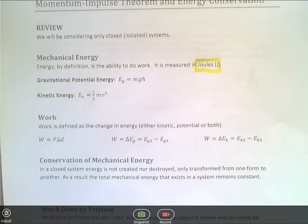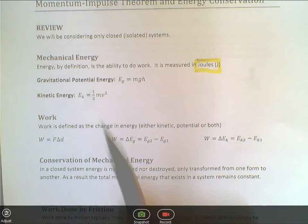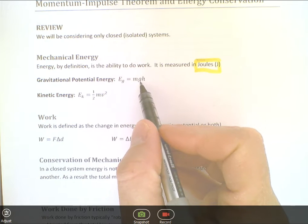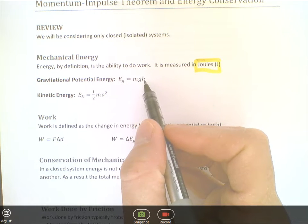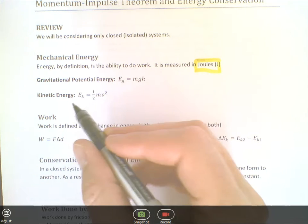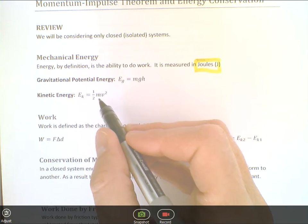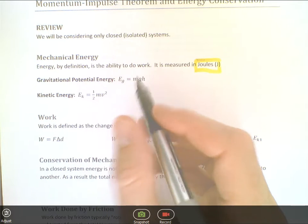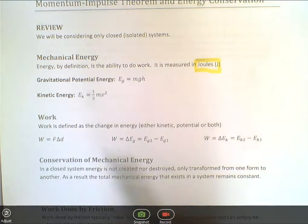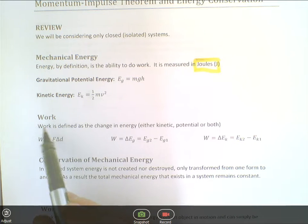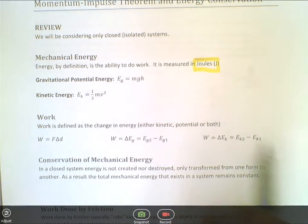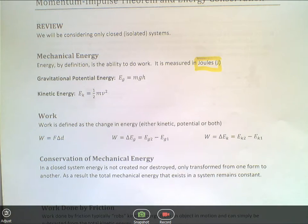We had two different types of energy that we looked at in grade 11. One was gravitational potential energy: Eg equals mass times the gravitational acceleration times the height above a reference point, mgh. And the kinetic energy is 1 half mv squared, or you can write it as mv squared over 2. Now, if you recall how we got to those, it was through this work formula.